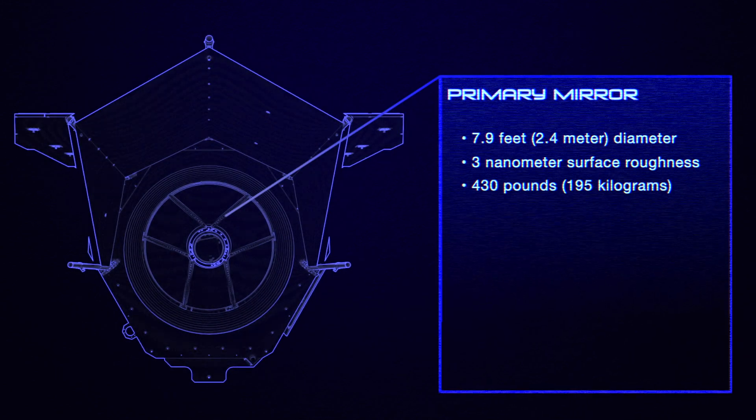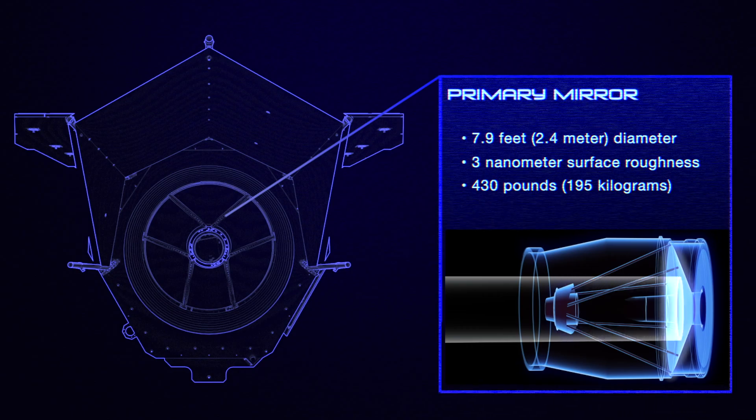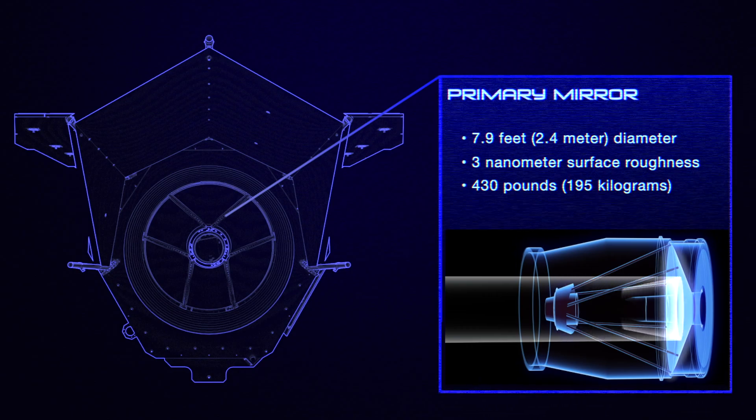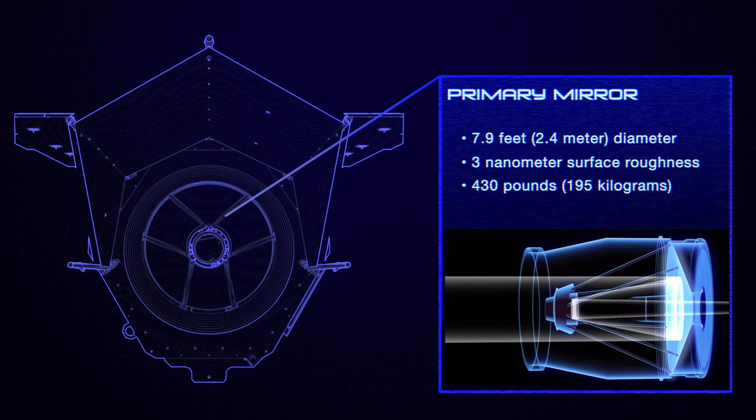This is where Roman is closest to Hubble. It has the same size and type of main mirror, a 2.4-meter precisely shaped piece of silver-coated glass. The size of this mirror is partly how Roman matches Hubble's resolution.